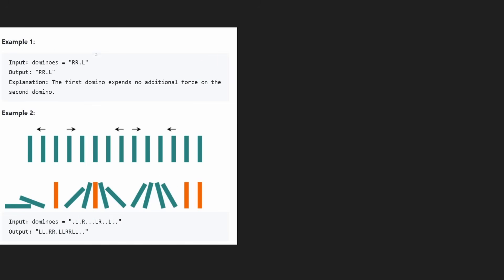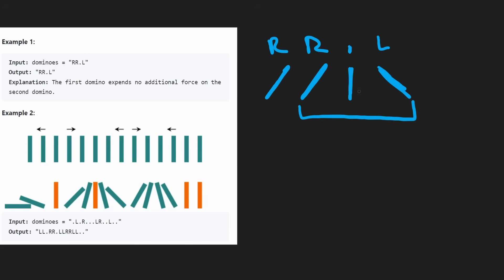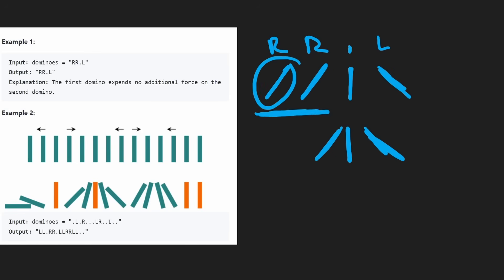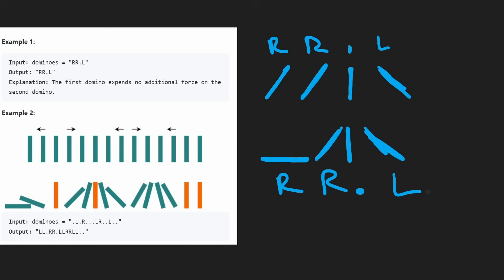The first example is R, R, dot, L. The first domino is leaning right, second leaning right, third is straight up, and the fourth is leaning left. After one second, these three dominoes are going to push up against each other at the same time — the middle dot is going to stay standing straight up. This one will fall over but the state doesn't really change. The state here is still R, R, dot, L — nothing really changed.